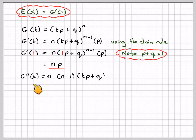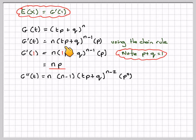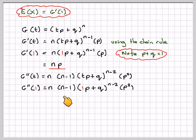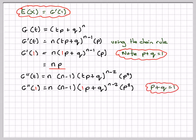Now for g''(t), we bring down n minus 1, so we have n times (n-1) times (tp + q)^(n-2). We differentiate the bracket to get another factor of p, giving p squared — again using the chain rule. So g''(1) will be n(n-1) times (1·p + q)^(n-2) times p squared. But p + q equals 1, so 1^(n-2) is also 1, leaving us with n(n-1)p².